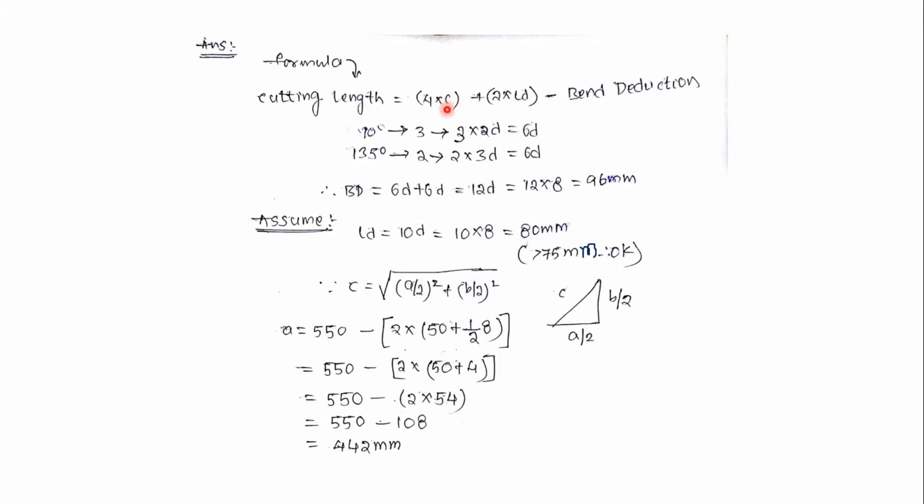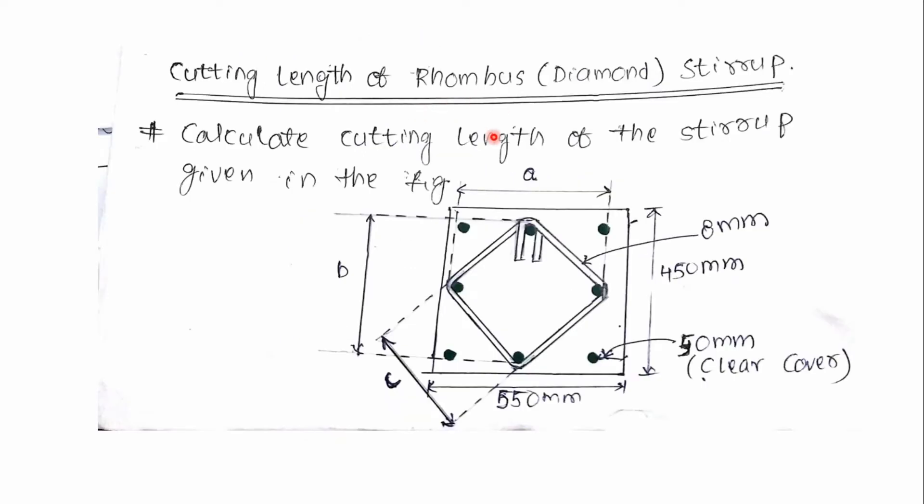What is c here? C is the inclined length of the stirrup, means from this center of the stirrup to this center of the stirrup. ld is the development length which is from here to here. Our ultimate aim is to calculate the total length of this stirrup, this much.